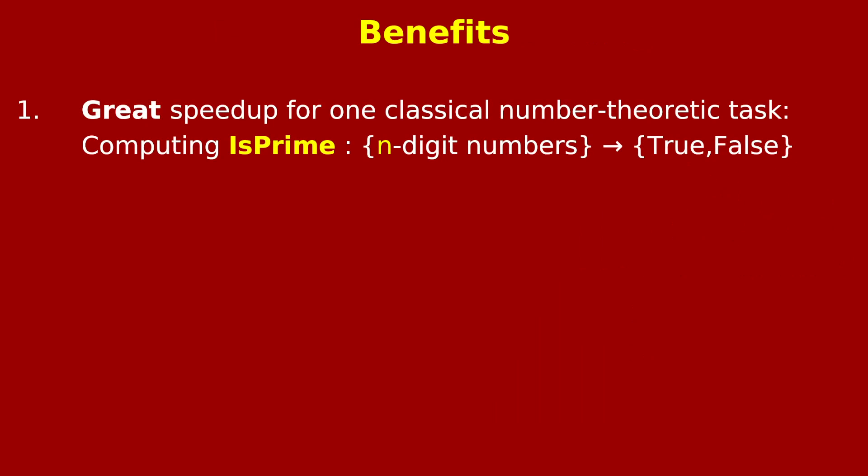Now, what are the benefits of using randomness to solve algorithmic tasks, particularly ones that don't have anything to do with randomness inherently? Well, one benefit is that it gives you a great speed up for a particular classical number theoretic task, namely computing the primality or compositeness of an n-digit number.